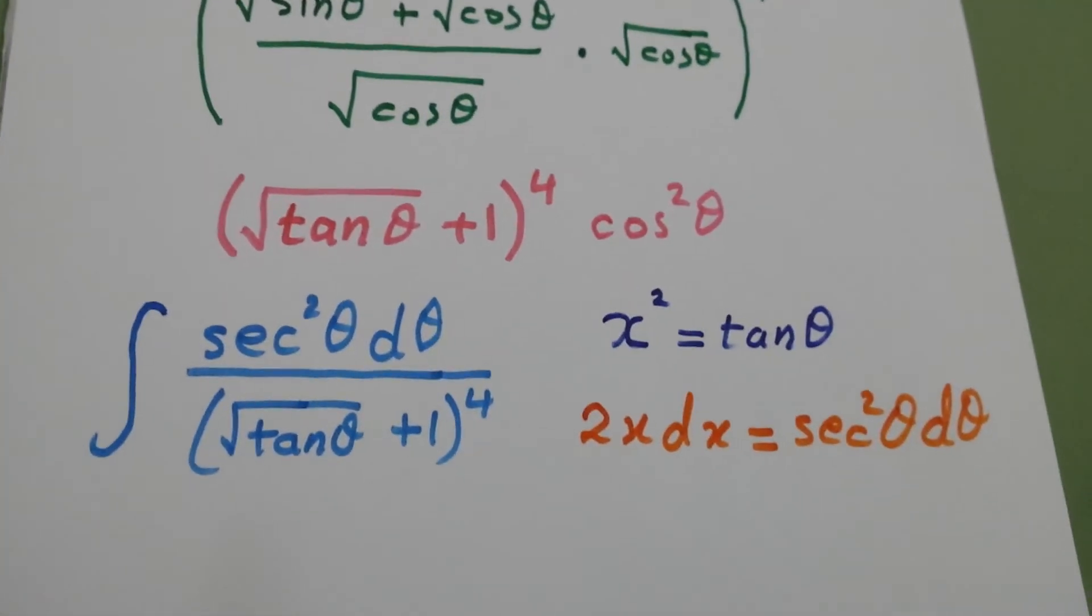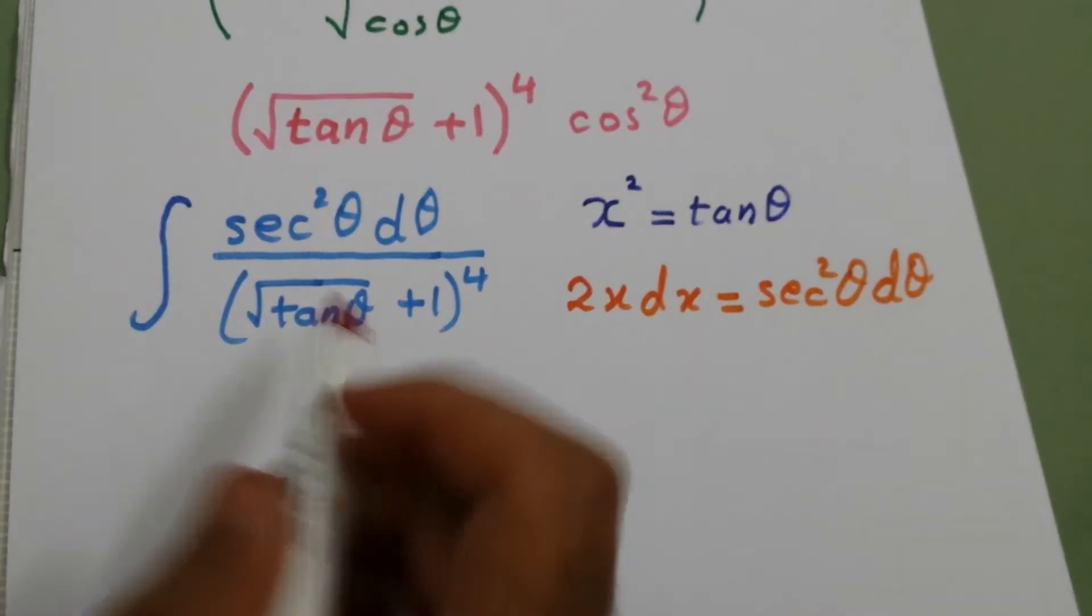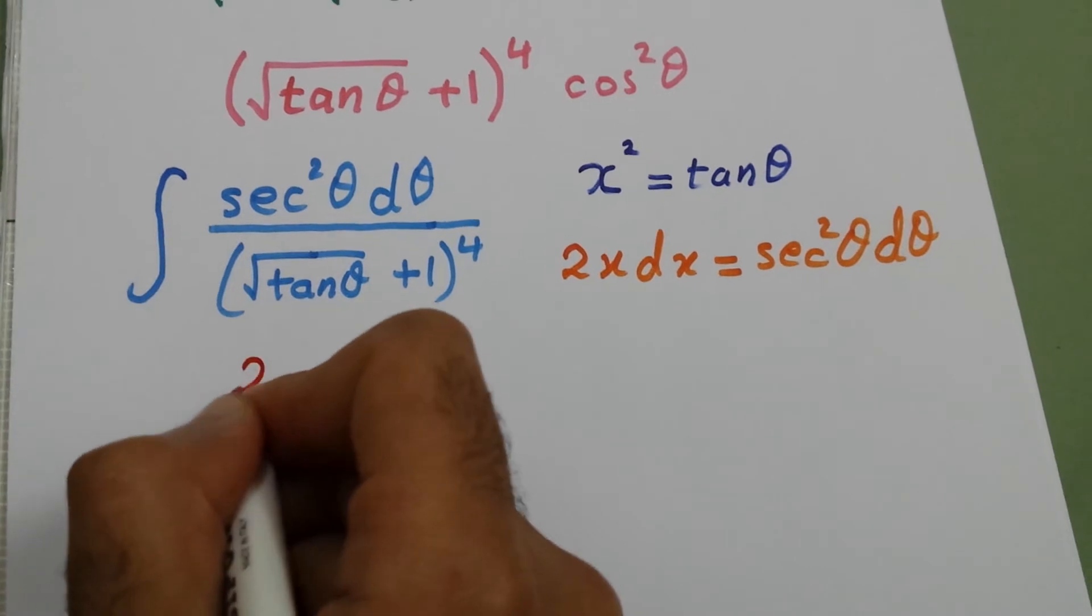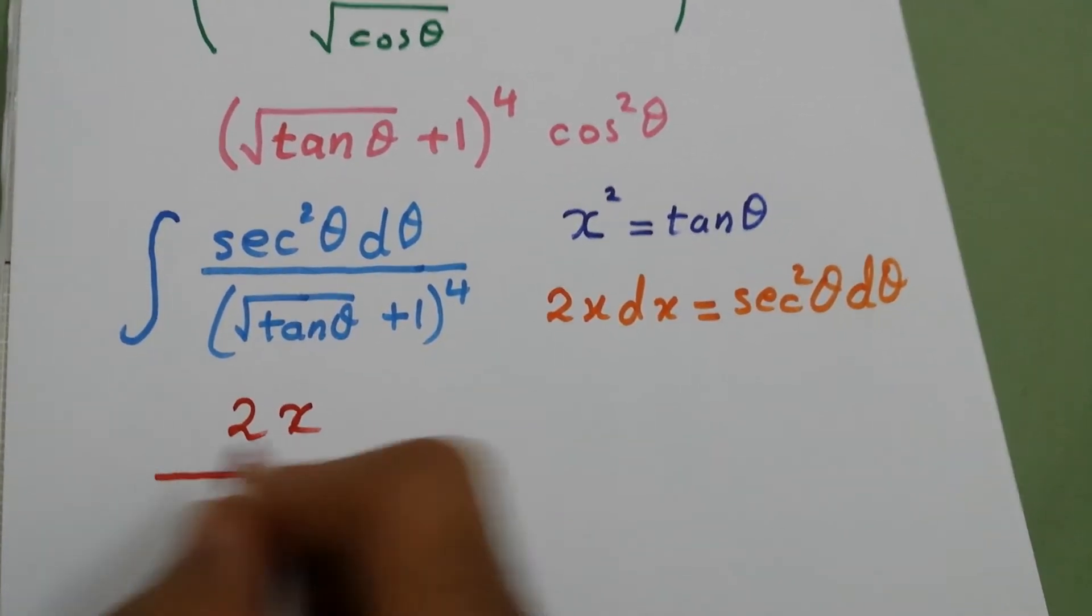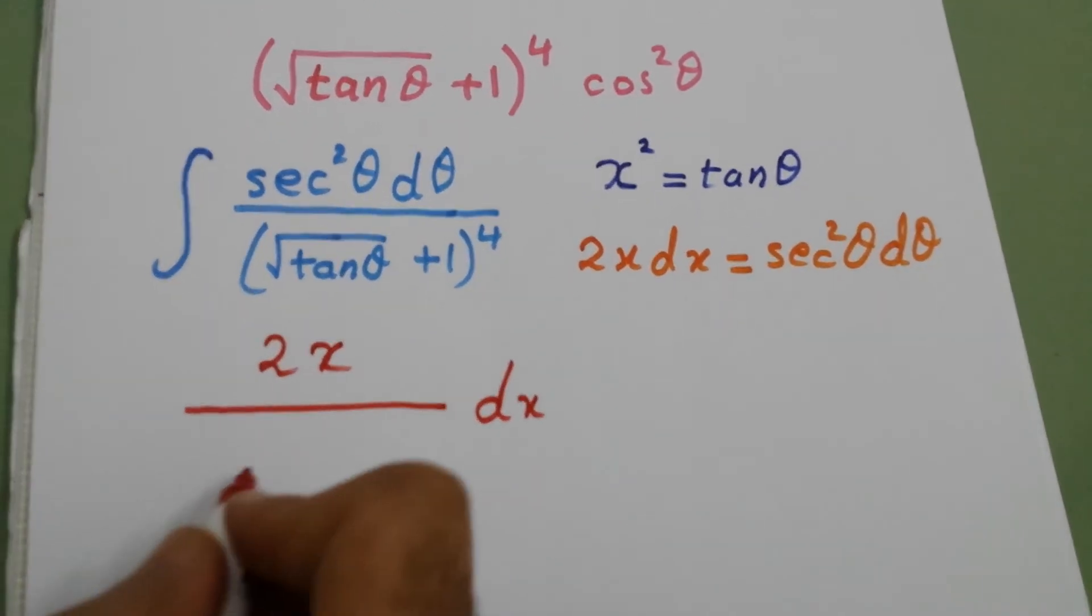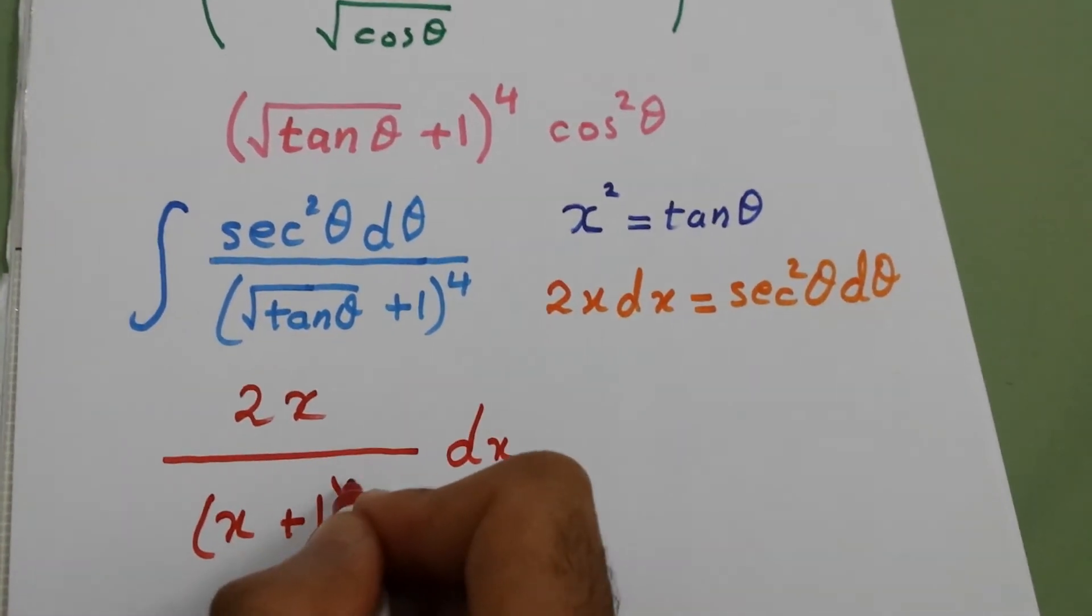Now substitute the integral. Instead of secant square d theta, we will write 2x dx over x plus one, all to power four.